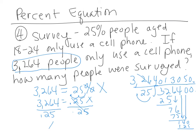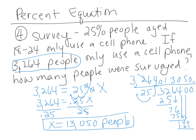So X — how many people were surveyed — would be 13,050 people. So 13,050 people were surveyed in total, and 25% of them only used a cell phone and got rid of the landline.